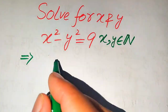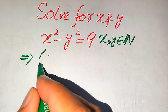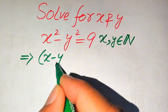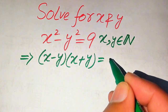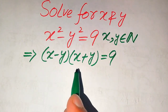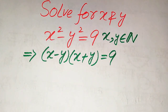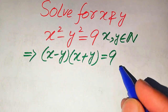The first thing we are going to do is focus on the left hand side. This is a very famous algebraic formula: x squared minus y squared equals (x minus y)(x plus y), which equals 9. Now the left hand side is a product of two factors, but on the right hand side we have only one factor.